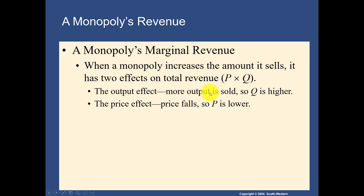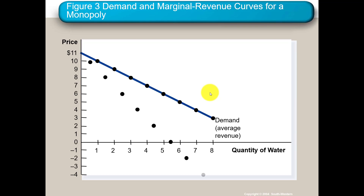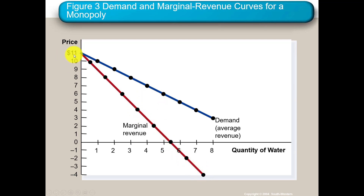If you increase output, two things happen: the price falls, but you gain revenue through volume — more output is sold even at a lower price. The diagram shows marginal revenue in red and the demand curve (average revenue) in blue, both sloping downward. Marginal revenue goes into negative territory. As price goes down, quantity goes up — the monopoly must reduce price in order to sell more.